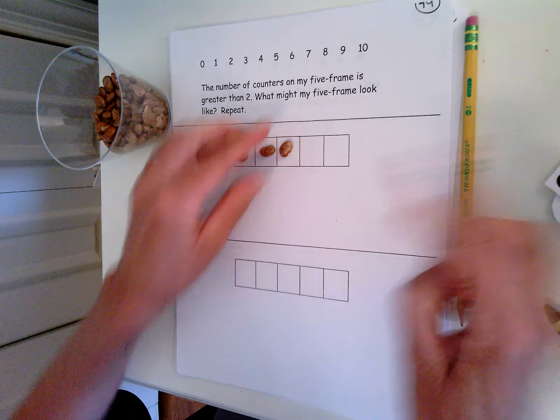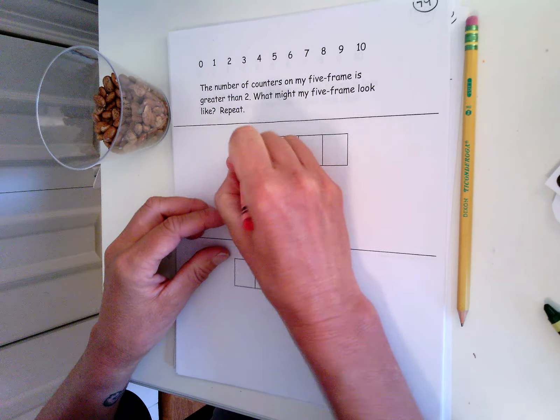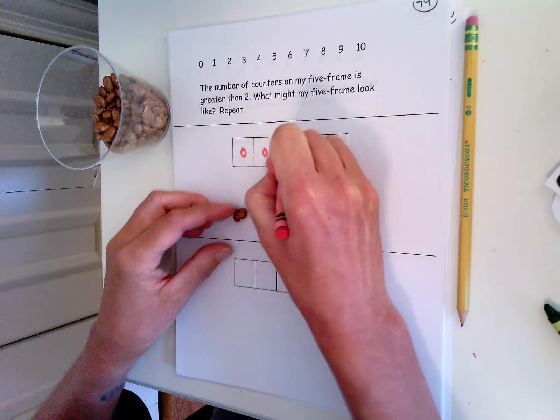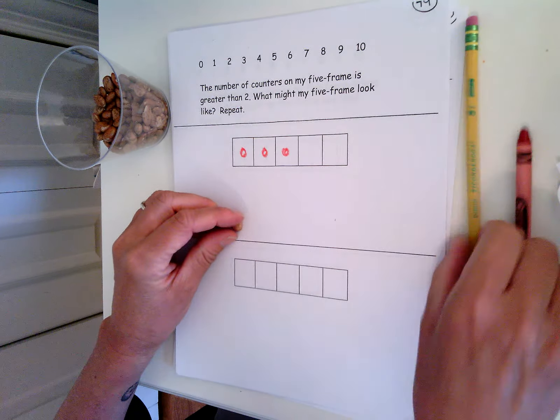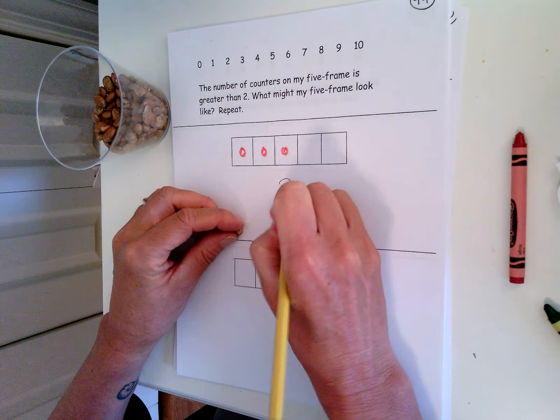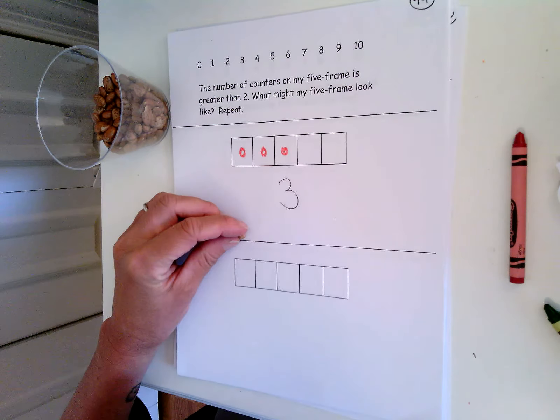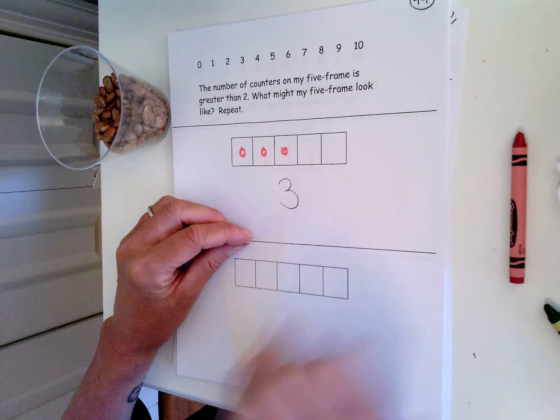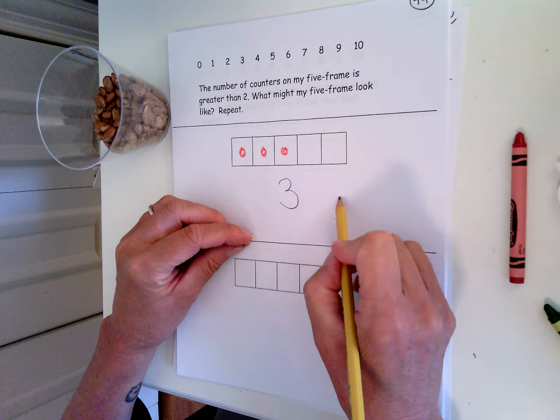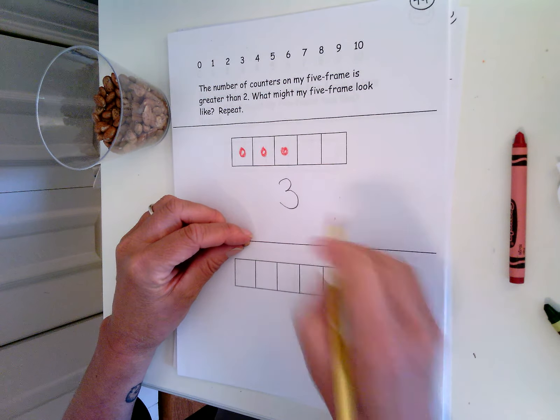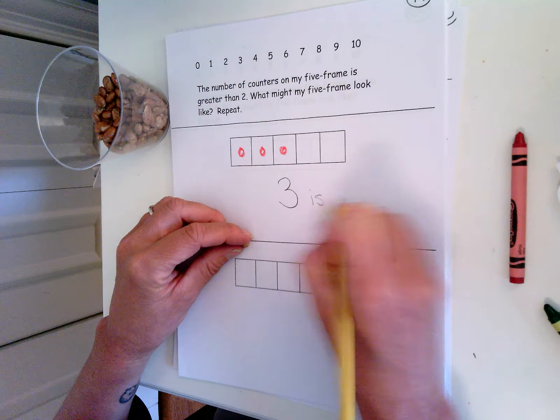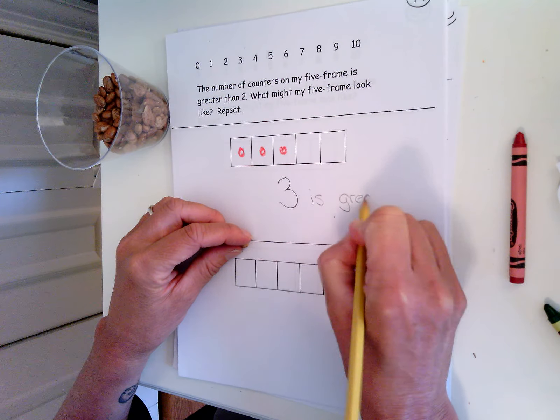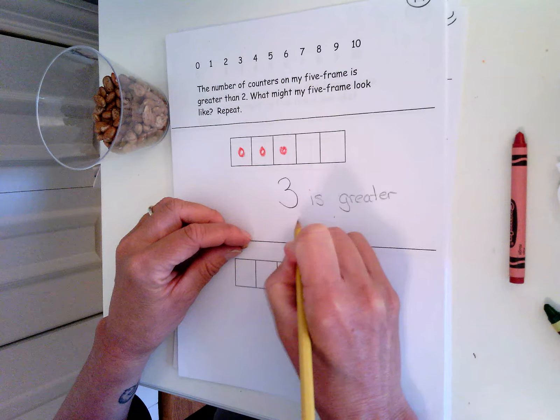So I could draw that on and I could put three. And if I wanted to, I could also say, I could write the words three is greater than two. Three is greater than two.